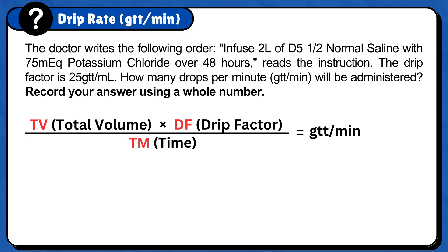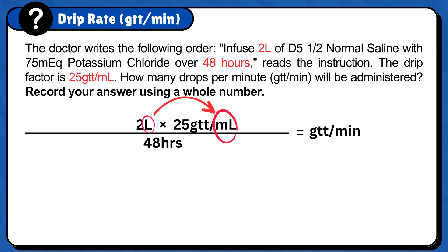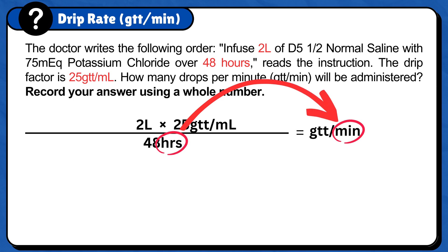Now that the formula is ready, we need to plug in the numbers. Start with drip factor because it is usually given to you — for this problem it is 25 gtt per milliliter. For total volume, plug in the doctor's order in volume, which is 2 liters. And for time, plug in the time that will take for the prescription to be administered, which is 48 hours. But you will notice that we need to do some conversions: the total volume is in liters so it needs to be converted to milliliters, and the time is in hours so it needs to be converted to minutes.